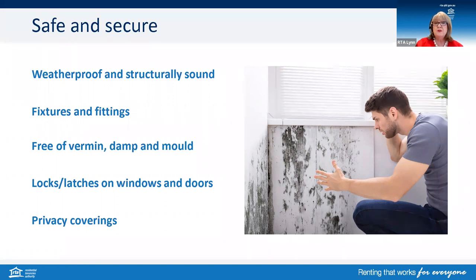Windows in all rooms where the tenant would expect privacy — such as a bedroom — will require privacy coverings. That could be a curtain, blind, tinting or glass frosting. This does not apply if the window is obstructed by a fence, hedge, tree or another feature.